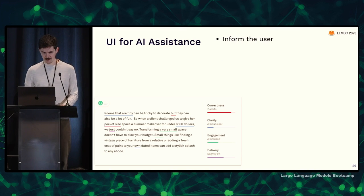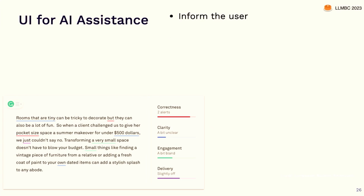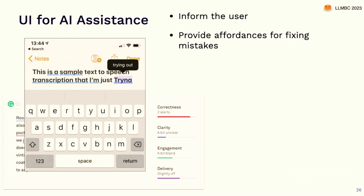Some patterns that are helpful: first, the AI should inform the user. This is a Grammarly screenshot — it doesn't just change your text; it tries to educate you as to why it's suggesting certain changes. I think that's good.